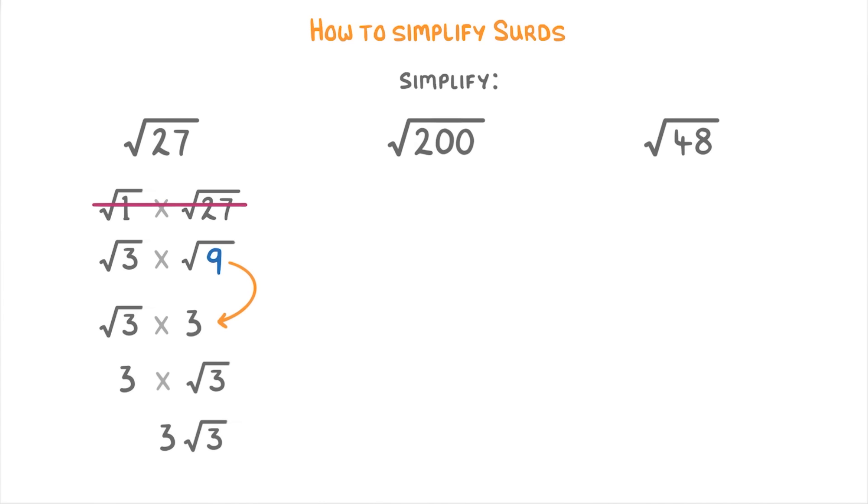For the square root of 200, it would take ages to write out all the factor pairs, so you really just need to be able to notice that 100 is both a factor and a square number. In this case there are actually a whole bunch of other factors that are square numbers as well, like 4 and 25, but importantly 100 is the biggest one and you always want to go for the biggest square factor.